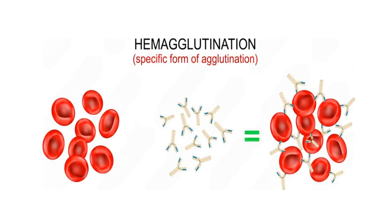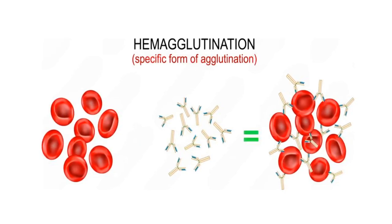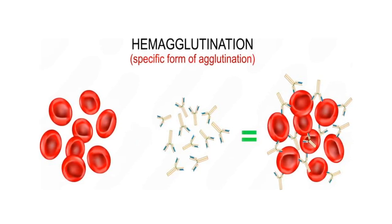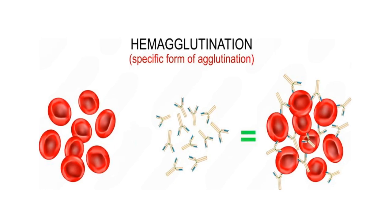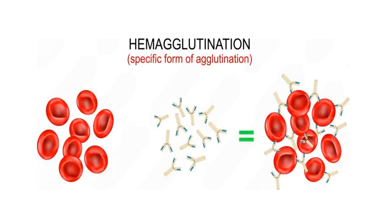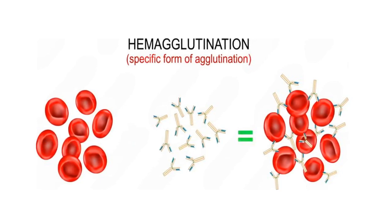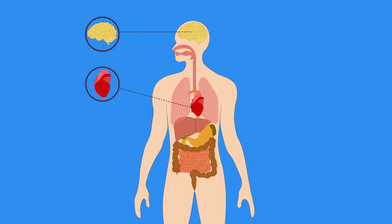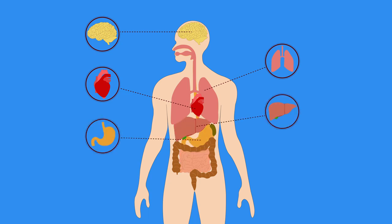Number 9. What happens if someone gets the wrong blood type? Receiving the wrong blood type can trigger a serious immune reaction. The recipient's antibodies attack the incompatible donor red blood cells, causing agglutination followed by hemolysis, which is the destruction of red blood cells. This may lead to symptoms such as fever, chills, low blood pressure, difficulty breathing, or shock. Severe reactions can result in kidney failure, organ damage, or even death, which is why blood type compatibility is critical in transfusions.